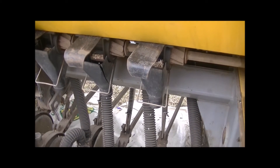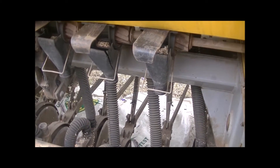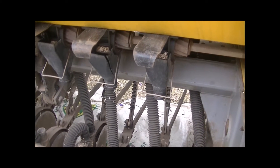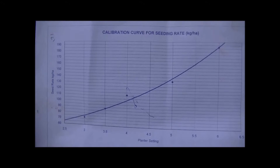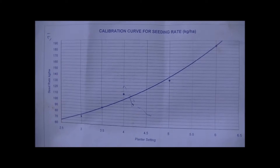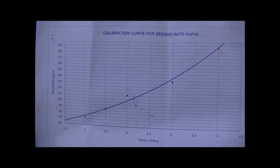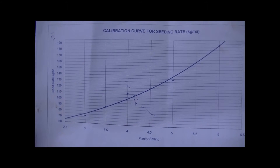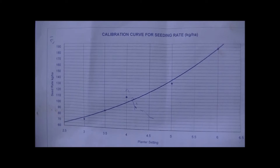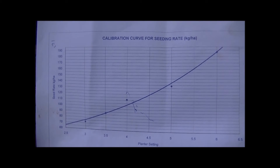This is then multiplied by 10,000 square meters, which is the area of a hectare. The result is the seed rate in kilograms at that setting. This can be repeated at other settings so that a curve showing seed rates against planter settings can be drawn, and the farmer uses it to set the required seed rate.